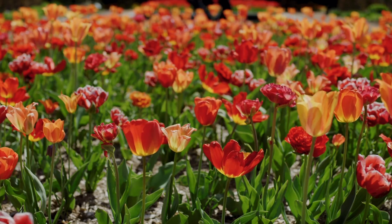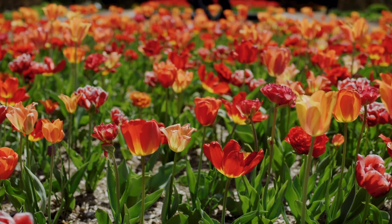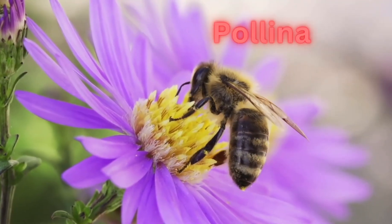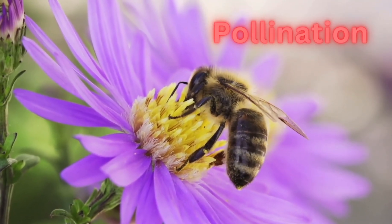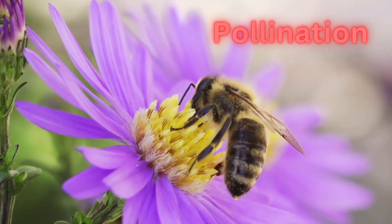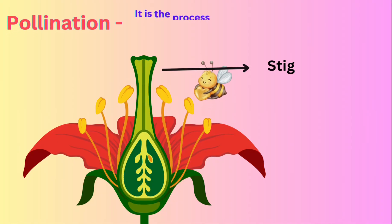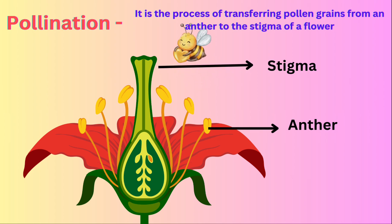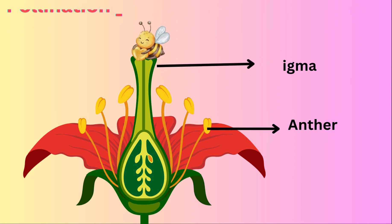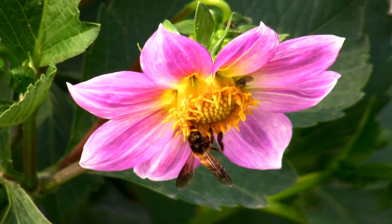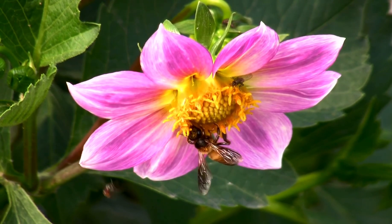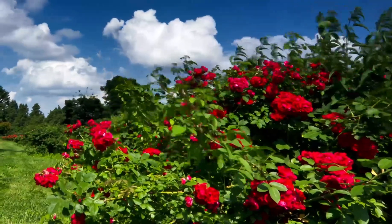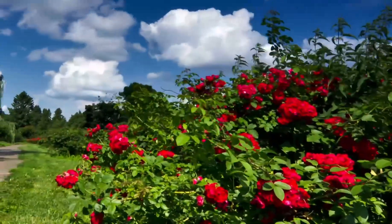Have you ever wondered how a simple flower transforms into a lush, fruit-bearing plant? The secret lies in a miraculous and vital process known as pollination. Pollination is a method where pollen grains are picked from an anther, which is the male part of a flower, and transferred to the flower's female part, called the stigma. This process is not just a fascinating aspect of nature's playbook, but the very backbone of plant reproduction and survival.